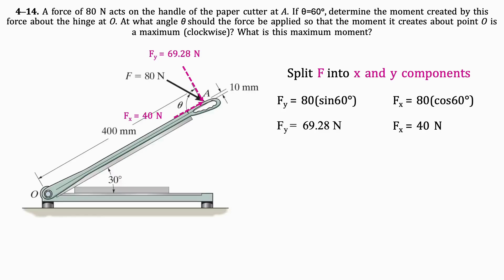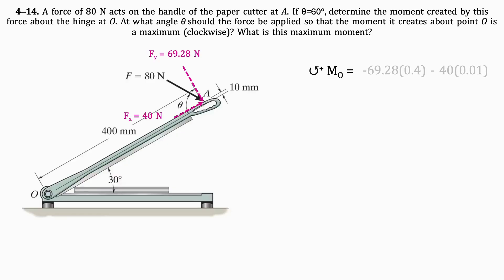Next, we'll get the moment of the force about point O. To find the moment of F about O, we will add its x and y components together. The moment of the y component about O is the y component of the force times its distance from O, which is 0.4 meters.